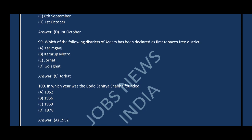Question number one hundred: In which year was the Borosaitra of Assam established? The correct answer is option A — 1952.